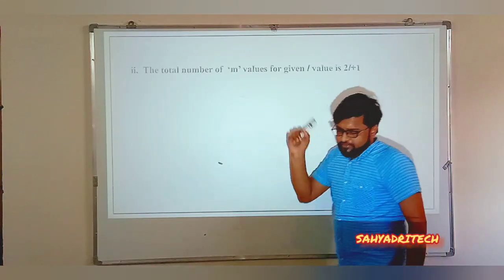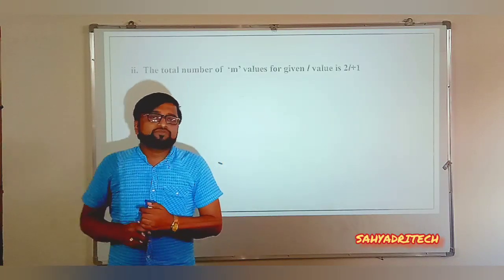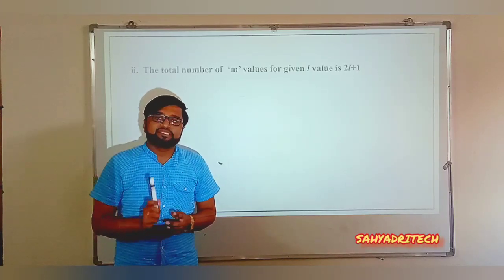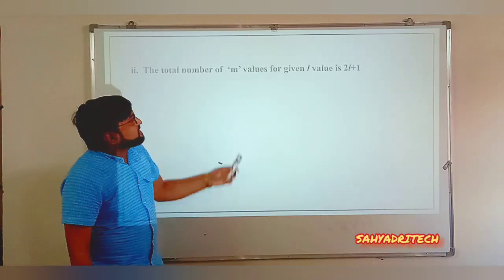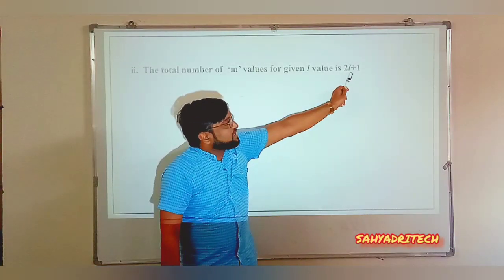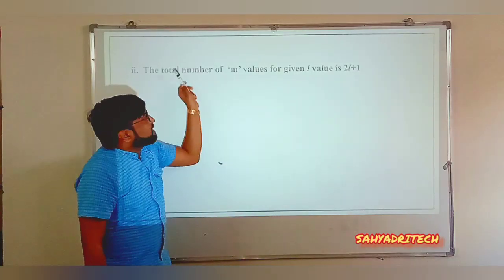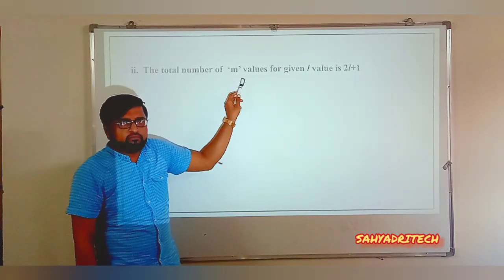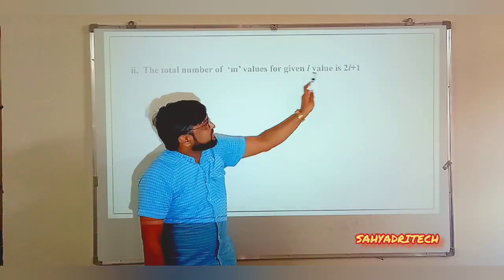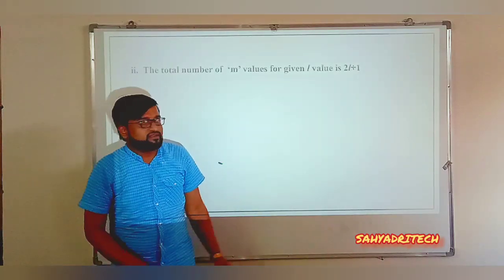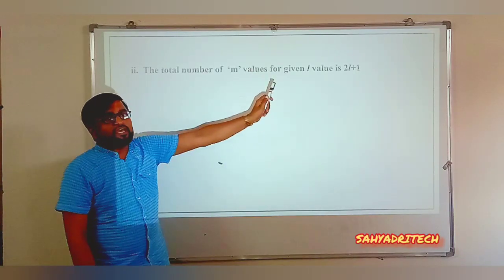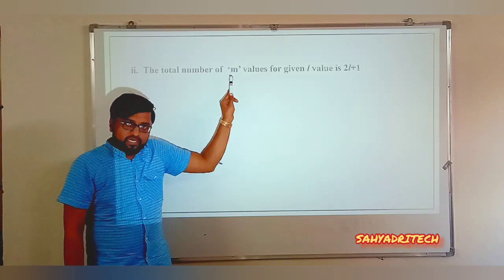The total number of M values — that is, magnetic quantum number values — depends on the value of L, the azimuthal quantum number. For any given value of L, the total number of M values is given by 2L + 1. By placing L values into this formula, we can get the total number of M values.